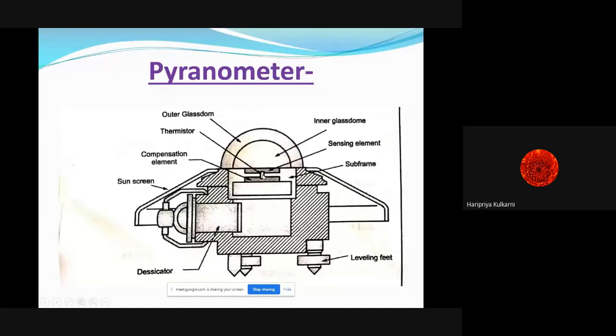Here there is a sensor - it's a thermistor, generally a thermocouple hot junction is placed here. Whatever sun rays are falling on it, accordingly its temperature will rise. The compensation element is the cold junction.